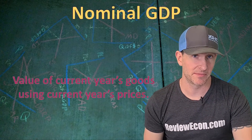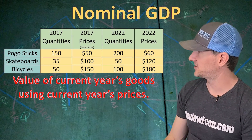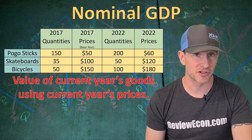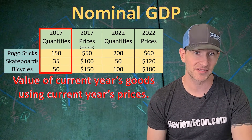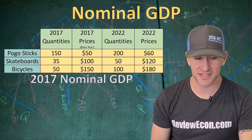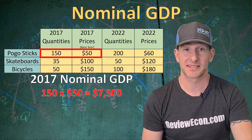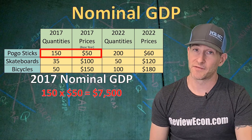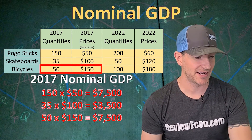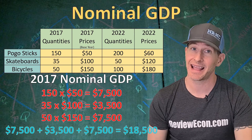Let's talk about how to calculate nominal GDP. Nominal GDP is the value of current goods being produced using the current year's prices. Here we have a fictitious economy that produces just three things: pogo sticks, skateboards, and bicycles. For 2017's nominal GDP, we use the quantities and prices from 2017. So 150 pogo sticks at $50 each gives $7,500. 35 skateboards at $100 each gives $3,500. And 50 bicycles at $150 each gives $7,500. Adding it all up, our nominal GDP for 2017 is $18,500.